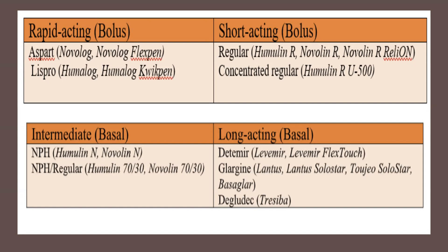We also have the NPH and regular combinations as part of the mixes: Humulin 70/30 and Novolin 70/30. For long acting basals, there's detemir — under detemir we have Levemir and Levemir FlexTouch. Glargine has three types: Lantus, Lantus SoloStar, and Toujeo SoloStar, including Basaglar. We also have degludec, which is Tresiba. You need to know the brand and generic, and know which is rapid acting, short acting, intermediate basal, or long acting basal.